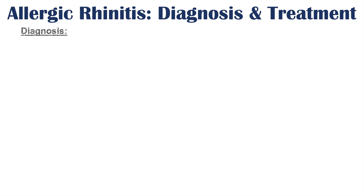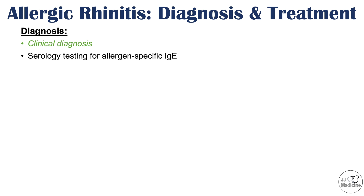The diagnosis of allergic rhinitis is often a clinical diagnosis based on history and physical examination. More specific methods include serology testing for allergen-specific IgE — looking for immunoglobulin E triggered by specific allergens like pollen from true grasses. An allergy skin test is another option, using small pinpricks with certain allergens to observe the patient's reaction.